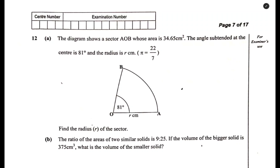Let us answer a question on mensuration from the 2024 GCE Paper 1. Some of the questions you are going to find challenging in Paper 1 come from mensuration or earth geometry, because here you deal with numbers that are in decimals but you are not allowed to use a calculator. That is where it becomes very difficult, so let us look at how we can easily simplify it.